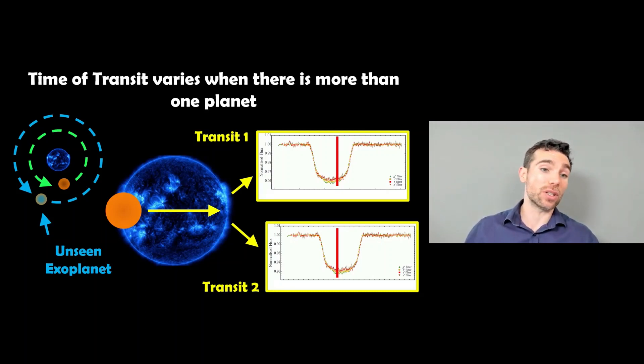So in this particular system, we've got an exoplanet which is the green orbit that we can actually see that transits the star. Then we've got an unseen one that we haven't detected and don't know is there, but it has an effect on the one that we can detect.